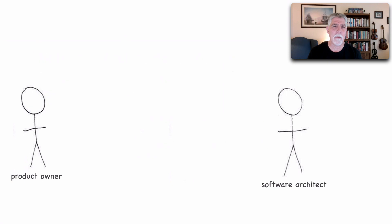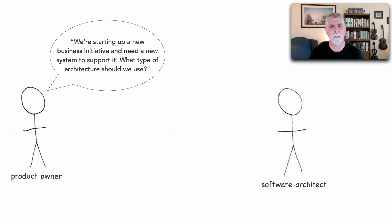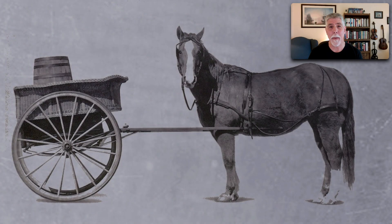To describe this anti-pattern, let's start with a conversation between a product owner and a software architect. The product owner states that we're starting up a new business initiative and need a new system to support it — what type of architecture should we use? The software architect responds with the obvious answer: microservices, of course. And this is how the cart before the horse anti-pattern emerges — making architecture decisions before we even have any sort of information or basis for those decisions.